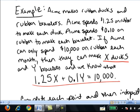In the next problem, we're told that the company Acme makes rubber ducks and rubber bracelets. Acme spends $1.25 on rubber for each rubber duck that it makes. They spend 10 cents on rubber for each bracelet that they make. They're only allowed to spend $10,000 on rubber each month. Therefore, we have this equation relating the number of ducks x and the number of bracelets y that Acme can make.